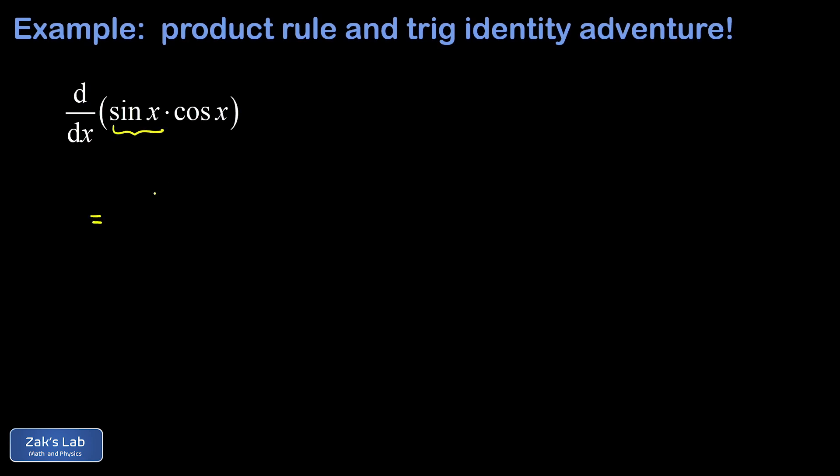So I take the derivative of the first function that gives me cosine x times the second function left alone so that's another factor of cosine x and then we add to that a term where we leave the first function alone so I have sine x and then multiply by the derivative of the second function.